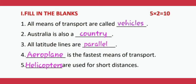Number four: Aeroplane is the fastest means of transport. A-E-R-O-P-L-A-N-E. Aeroplane. Number five: Helicopters are used for short distances. H-E-L-I-C-O-P-T-E-R-S. Helicopters.